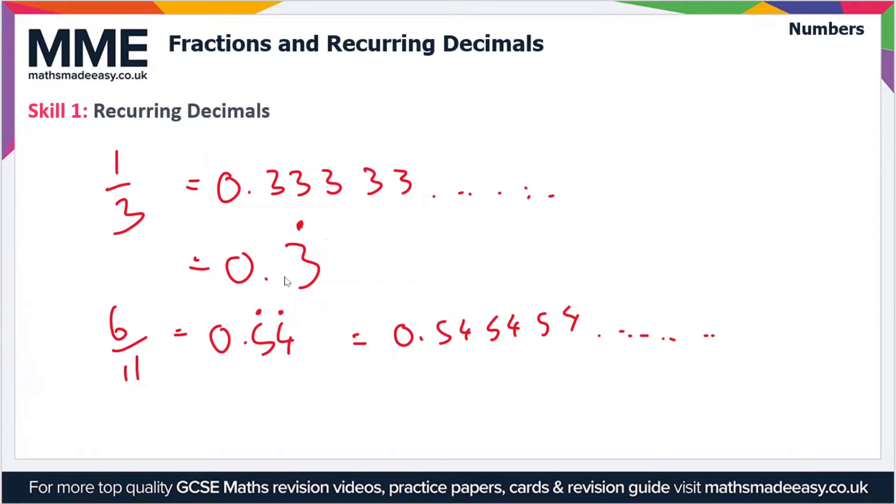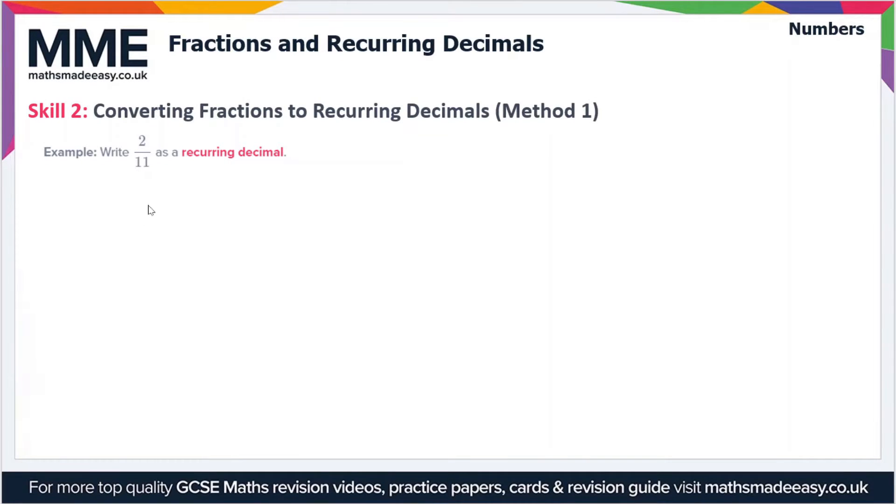But if it's just one number or one digit that's repeated, for instance in one third, then we just use one dot. In the rest of this video we'll be converting fractions to recurring decimals. There's two methods we can do it, and then in the second video on this topic we'll go the other way and convert recurring decimals to fractions.